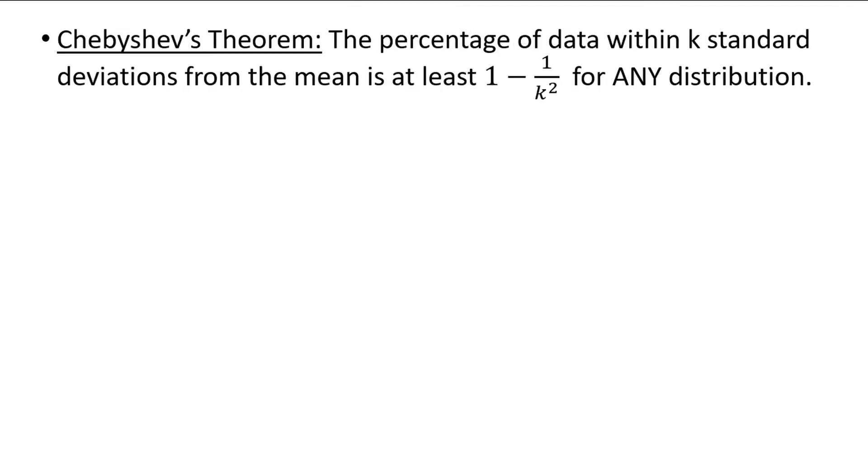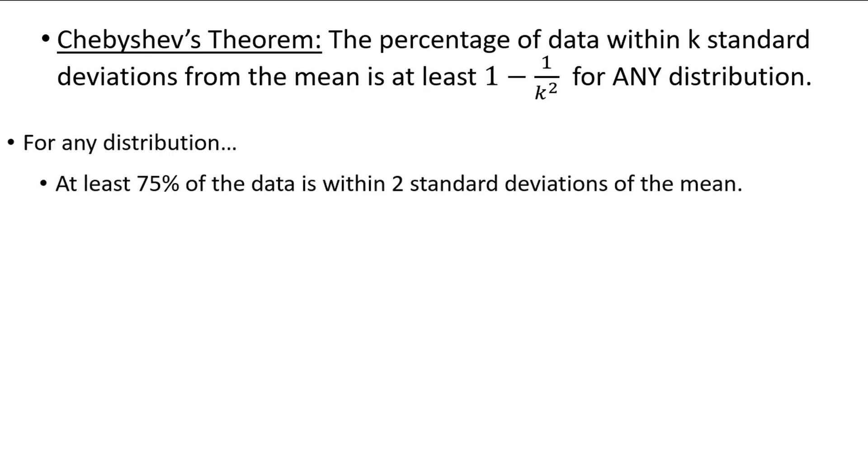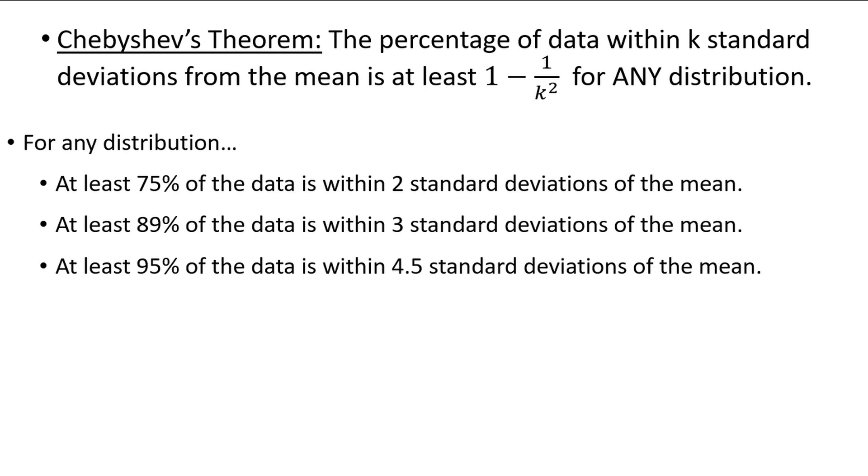Using Chebyshev's theorem, you should be able to verify these three statements. For any distribution, at least 75% of the data is within 2 standard deviations of the mean, at least 89% of the data is within 3 standard deviations of the mean, and at least 95% of the data is within 4.5 standard deviations of the mean. Just plug in k equals 2, 3, or 4.5 into the formula, and you should get the percentages that I have here.